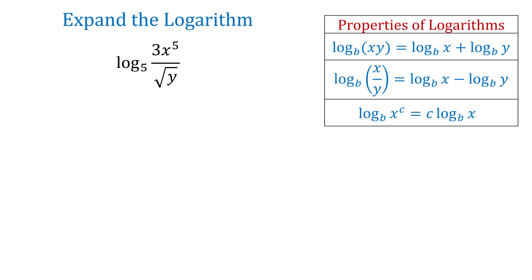In our example, in the numerator, we have a product of 3 and x to the 5th power. Then, this product is divided by square root of y. Then, first, we will expand this logarithm as log base 5 of 3 plus log base 5 of x to the 5th power minus log base 5 of square root of y.